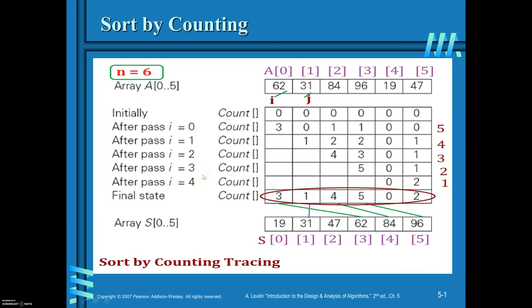Sort by counting is an algorithm to arrange the elements of an array in ascending order. The idea behind this algorithm is, for every element of the array, get the count — that is, where exactly that element is to be placed. Once you know the exact position of that element, copy the array elements onto a new array based on the position values.